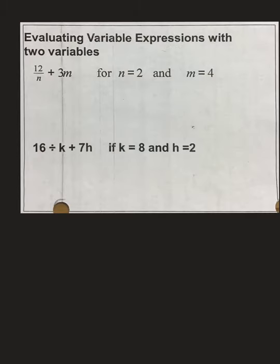So, the next two problems are a little bit more difficult, but they're still following the same steps. So, in this case, we have 12 over n plus 3m. You've got to remember when a number and a variable are squished together, that means 3 times m. So, don't forget, multiplication is happening in between there. And don't forget, fraction bar represents division. So, now we have n equals 2 and m equals 4.